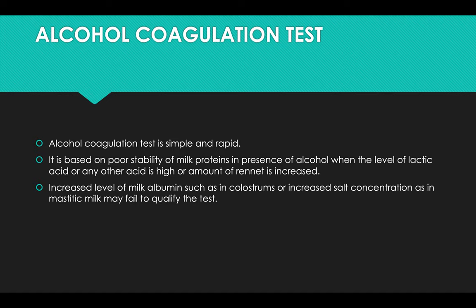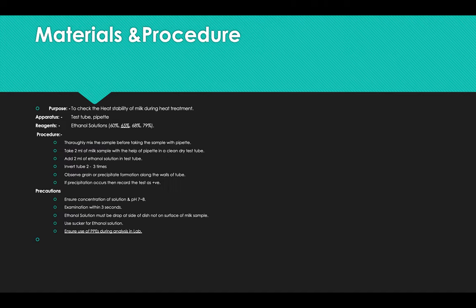Alcohol coagulation test is simple and rapid. It is based on poor stability of milk proteins in presence of alcohol. When the level of lactic acid or any other acid is high, or amount of rennin is increased, increased level of milk albumin such as colostrum, or increased salt concentration as in mastitic milk may fail to quantify the test.